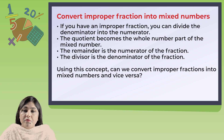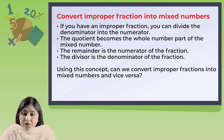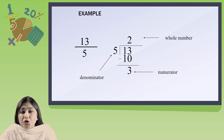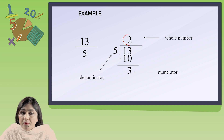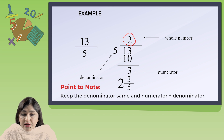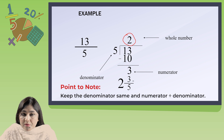Now I am going to teach you how to convert improper fractions into mixed numbers. Divide the numerator by the denominator. The quotient becomes the whole number part, the remainder becomes the numerator of the fraction, and the divisor stays as the denominator. For example, 13 over 5: divide 13 by 5 — 5 goes into 10, subtract to get remainder 3. So 2 is the whole number, 3 is the new numerator, and the denominator stays 5, giving 2 and 3 by 5.